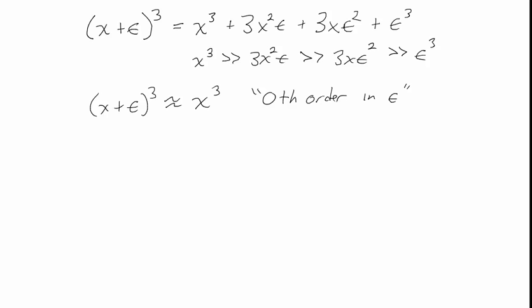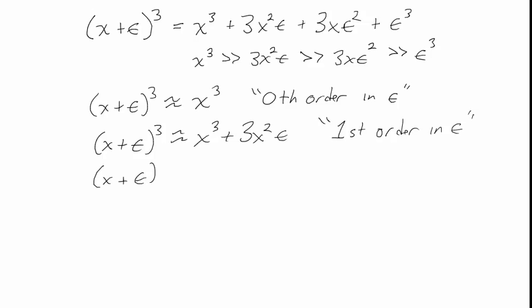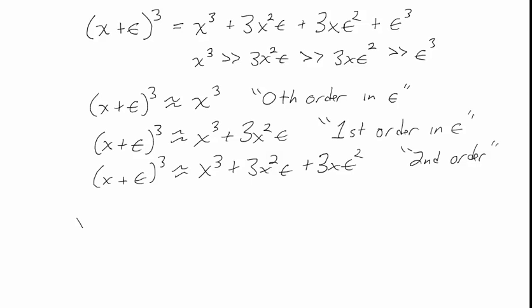The zeroth order approximation has no epsilon in it at all. On the other hand, we could approximate this as x cubed plus 3x squared epsilon — keeping the term with epsilon to the first power but leaving out the epsilon squared and epsilon cubed terms. This is first order in epsilon. Or we could keep up through the epsilon squared term for a second order approximation, and so forth. The zeroth order case is basically the limit of the expression as epsilon goes to zero.